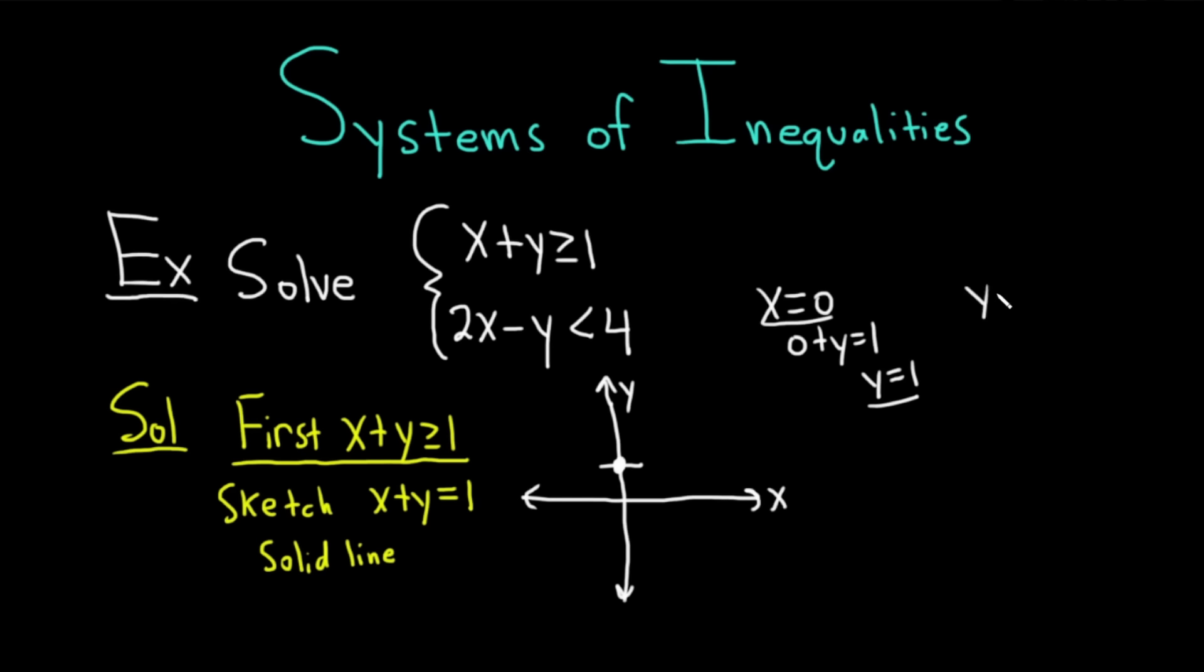When y is 0, we're going to get x plus 0 equals 1, so x is 1. When y is 0, x is 1, we have a dot here. This is a solid line because we have the equal to part in the inequality. So we've sketched the line.